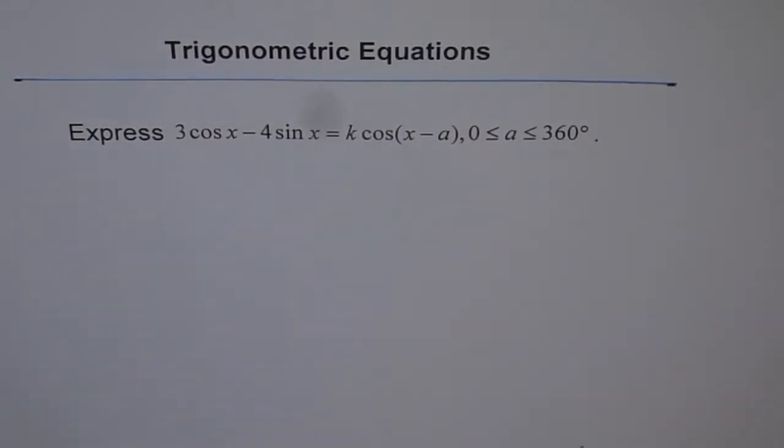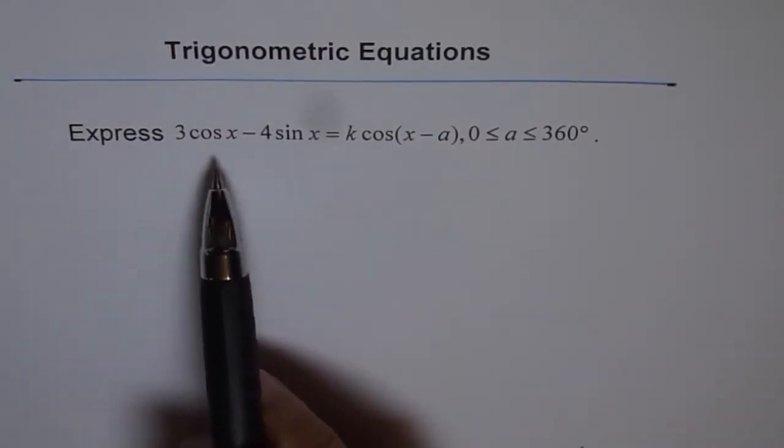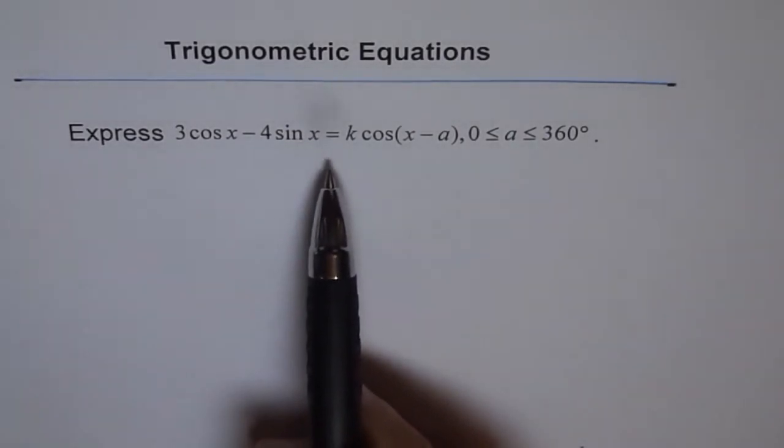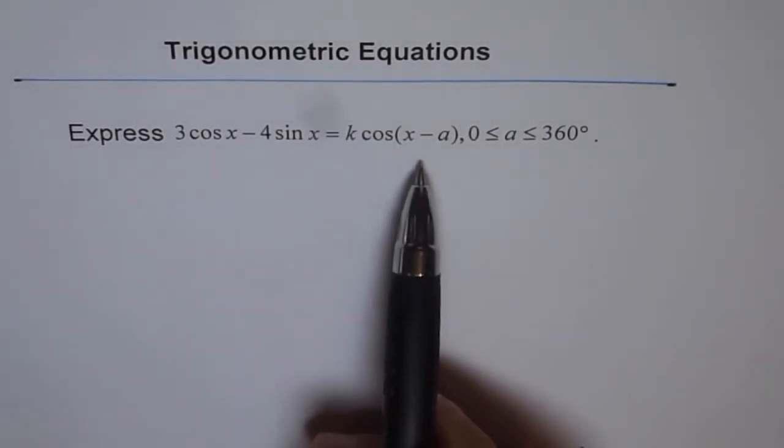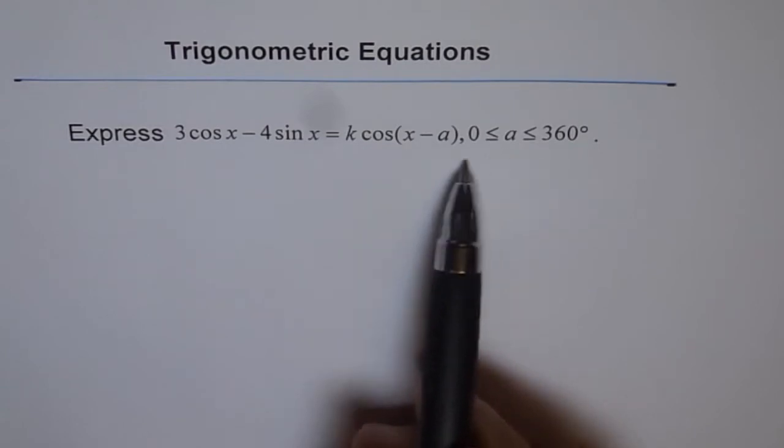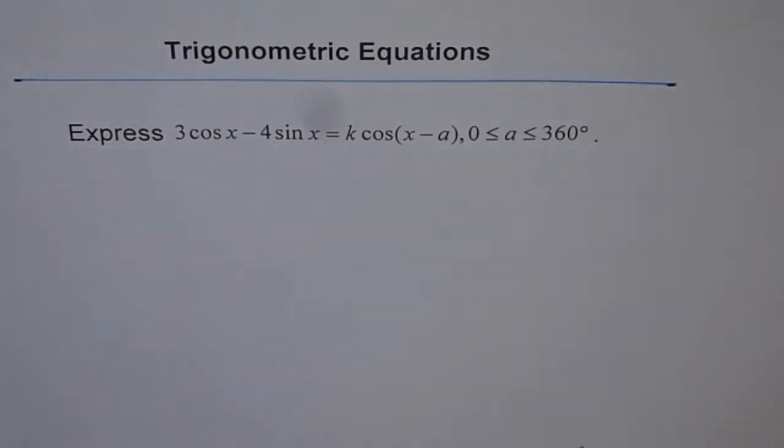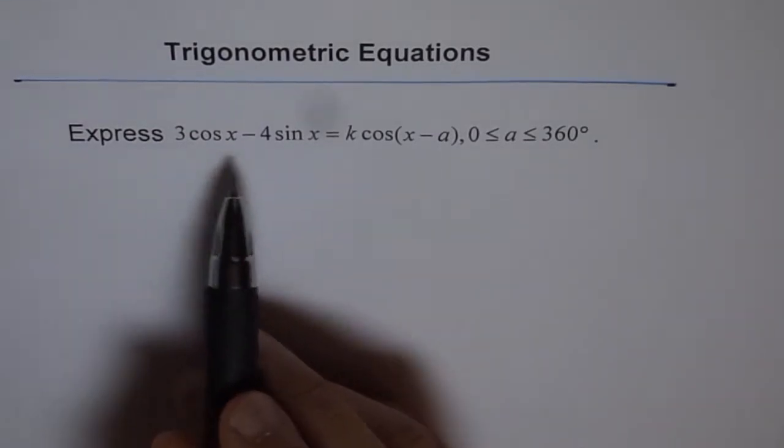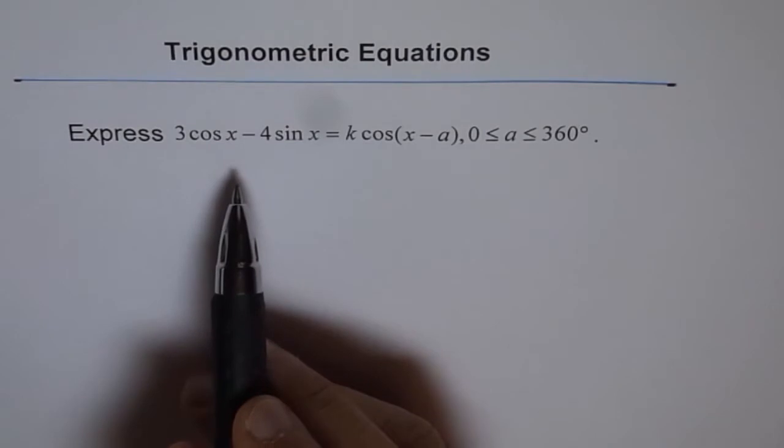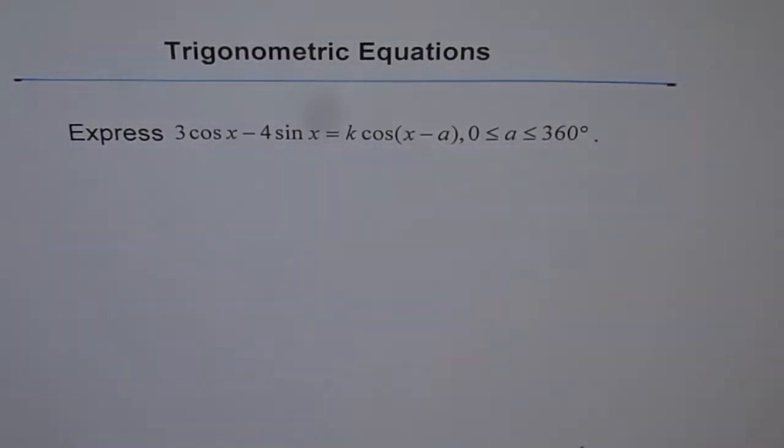Trigonometric equations: Express 3 cos x minus 4 sin x equals k times cos(x minus a), where a is between 0 to 360 degrees. I always find questions like this in test papers, and there are series of questions which could be solved in a similar way. We will do a specific one, and then consider a general solution in the next video. I would like you to see both videos so that you appreciate how to solve these kinds of trigonometric equations.